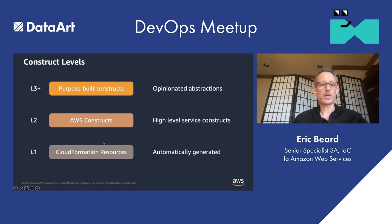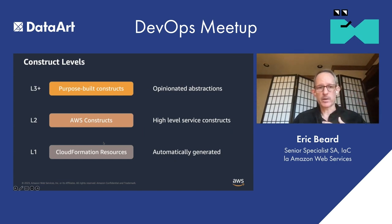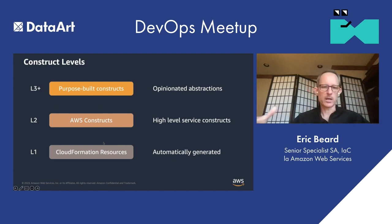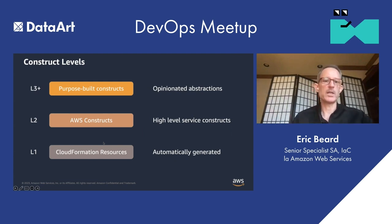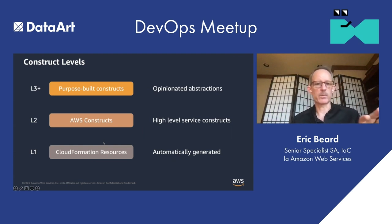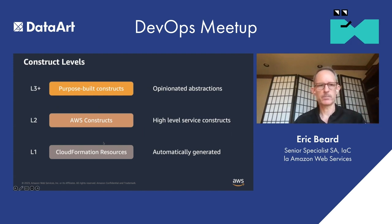The next level up is what we call an L3. We don't tend to write a lot of L3s — this is what we want you to write. An L3 is when you're taking a collection of L2s — three or four different services — and combining them together in a highly opinionated way to do something very specific for a use case. That might be something you can share internally at your company with other development teams who need to do kind of the same thing. This is where the real value of abstraction and using high-level programming languages comes in.